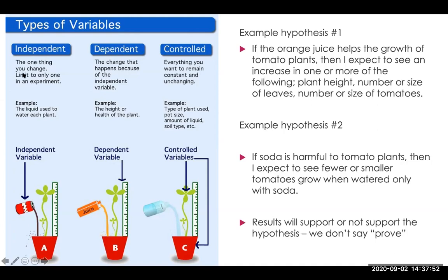The independent variable would be the soda, for example, and the dependent variable would be the plant growth. Note that this slide may look confusing because it shows a picture of juice and labels it the dependent variable — please note that it's showing the ruler as the dependent variable. So the growth of the plant is the dependent variable, not the orange juice.